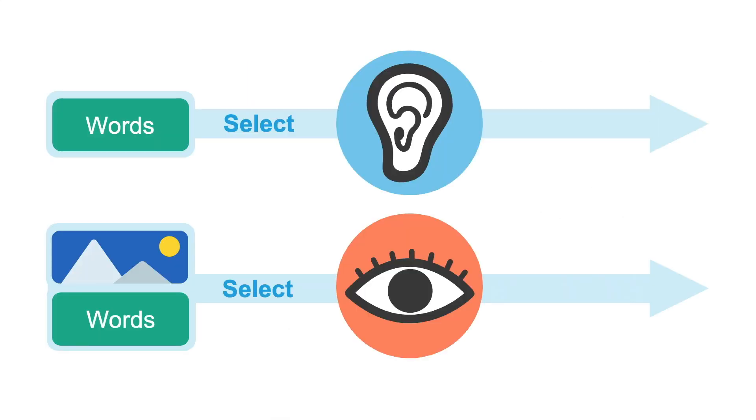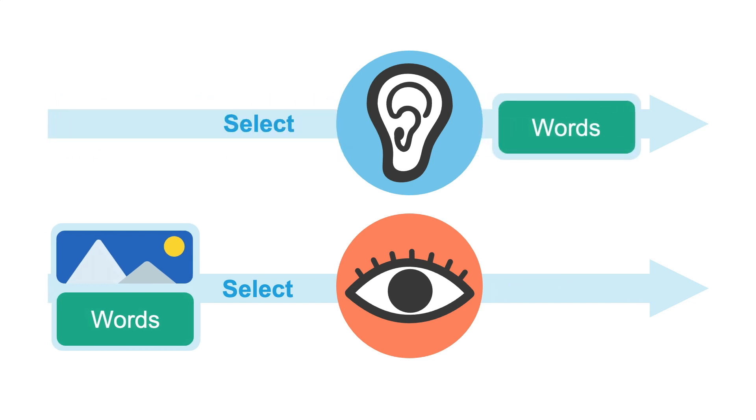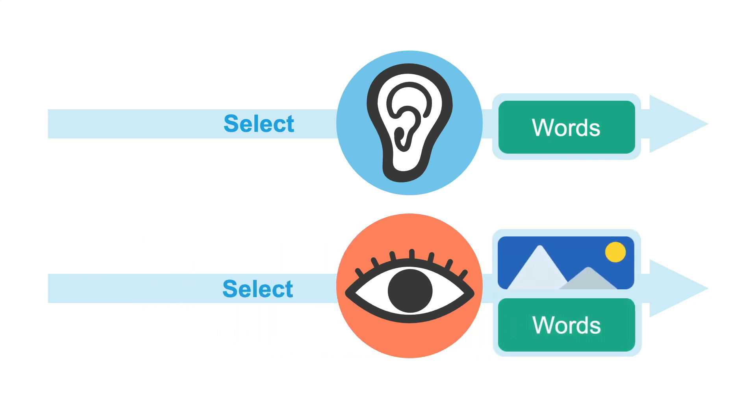So during learning, we are forced to select what we think are the most important words that come in through our ears and the most important words and images that come in through our eyes.